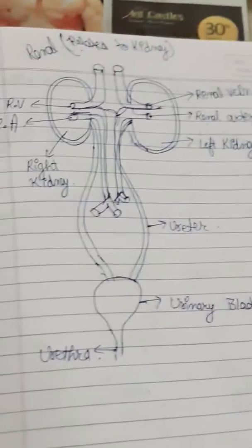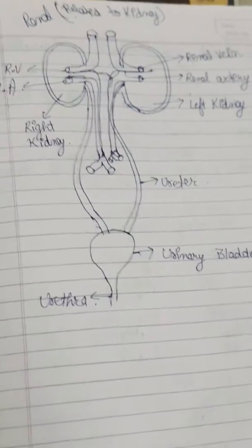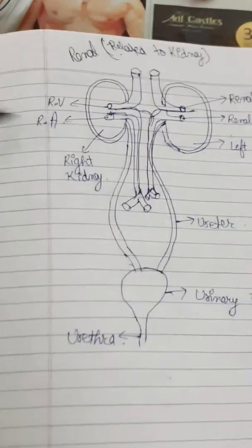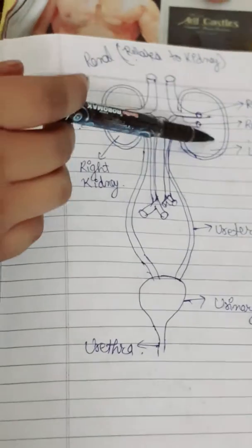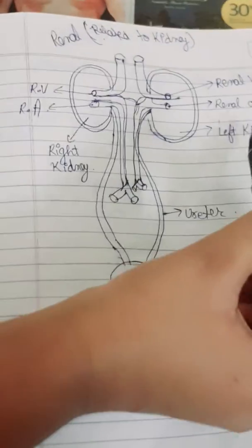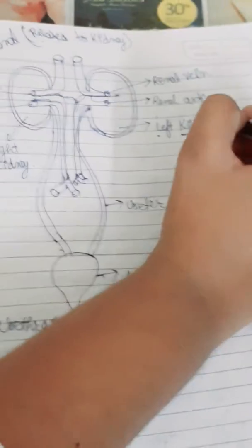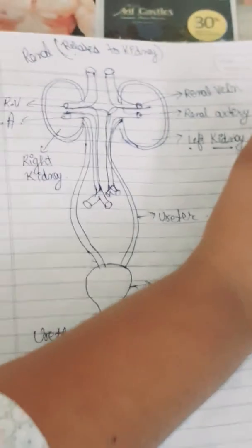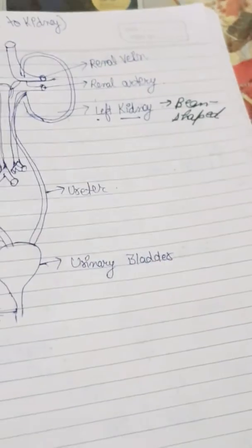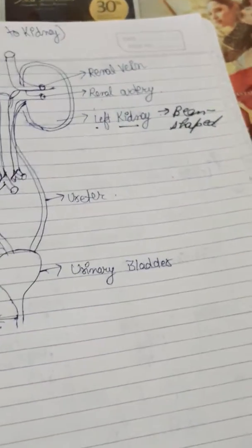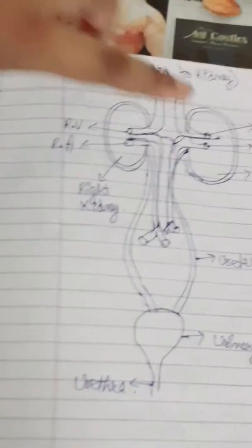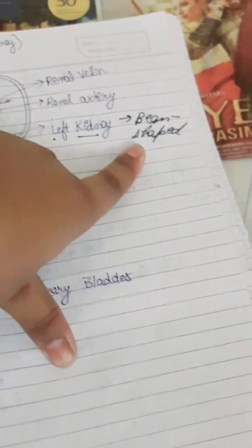The main organ of the excretory system is the kidneys. You can see this bean-shaped structure — this is the left kidney and this is the right kidney. The shape of the kidney is bean-shaped, which is a frequently asked question in many exams.